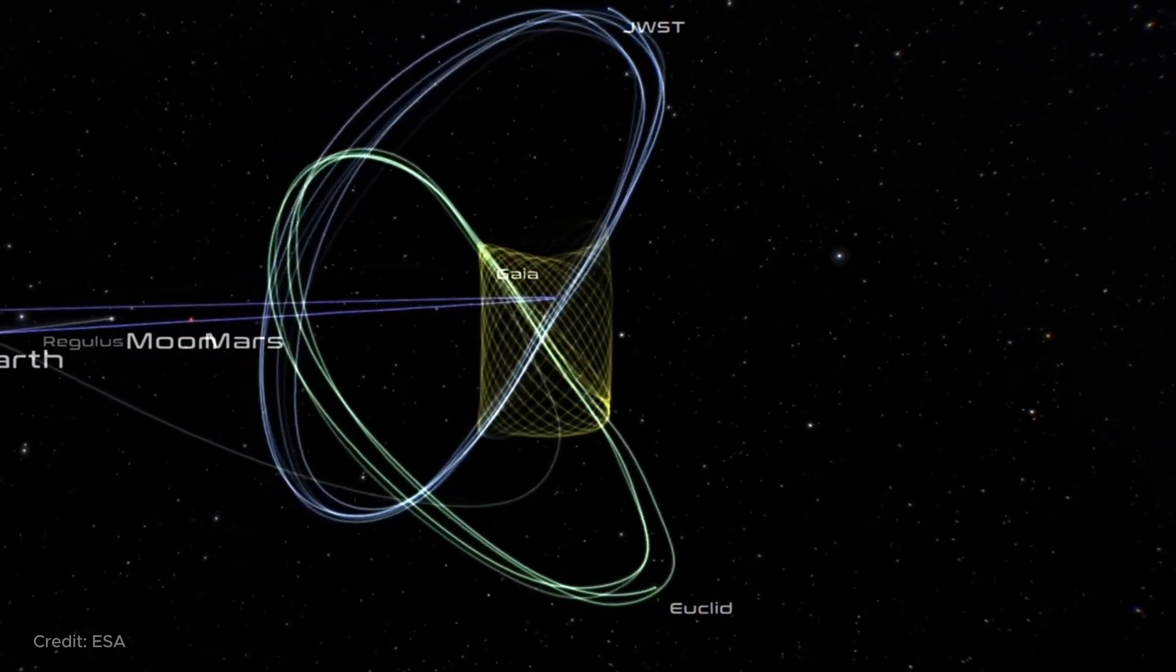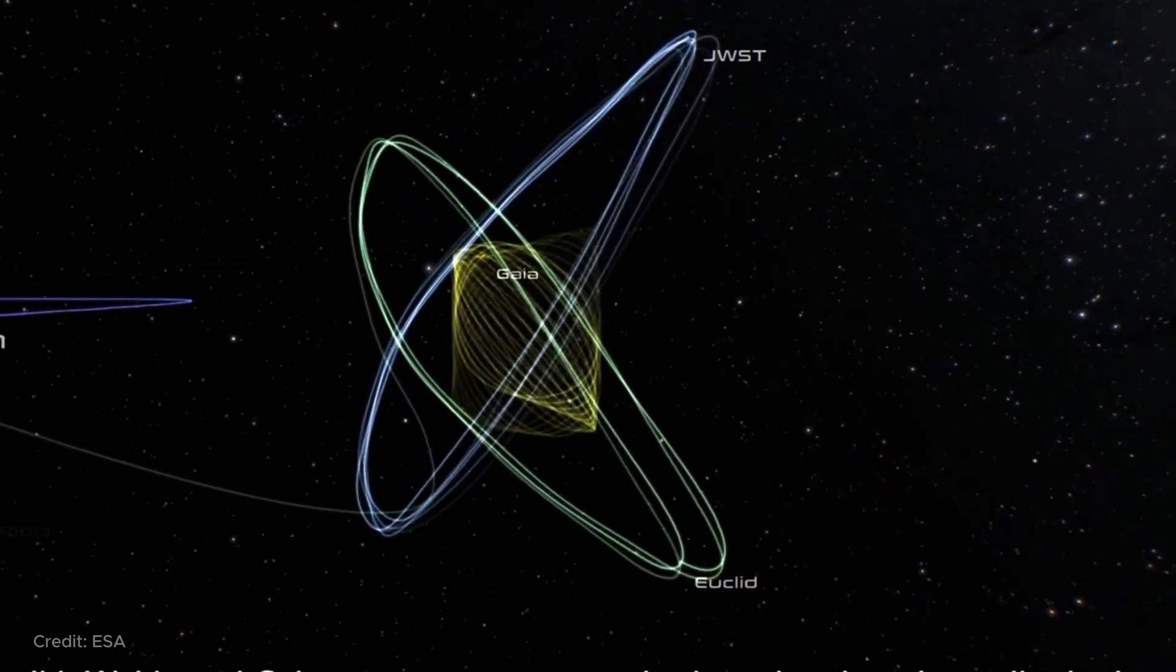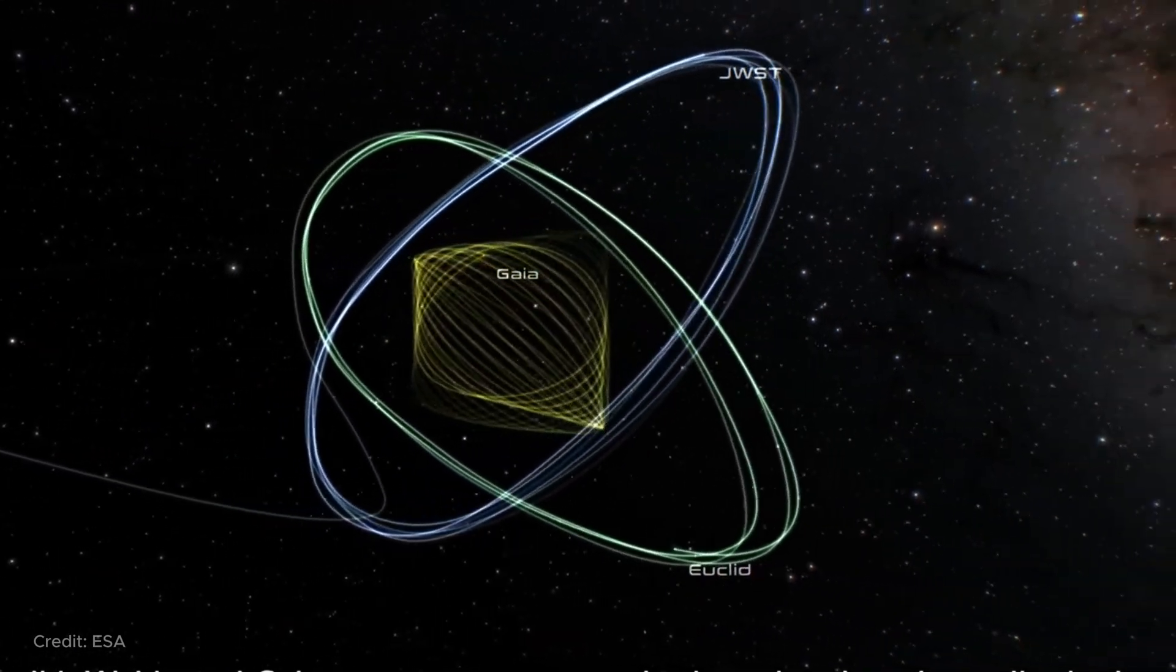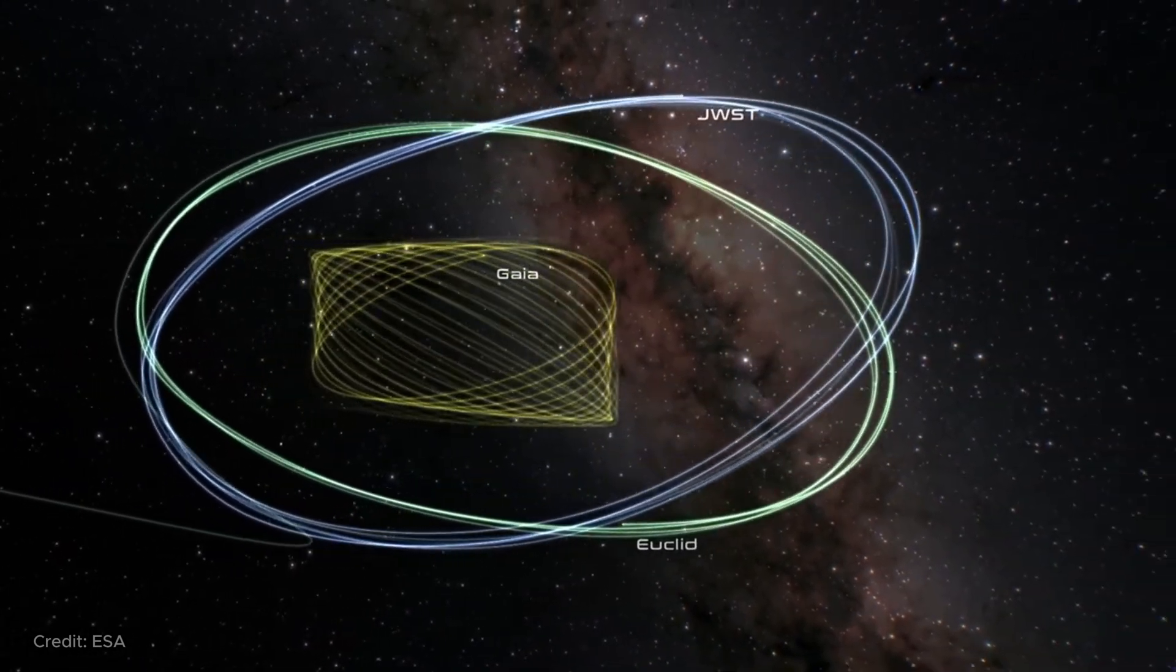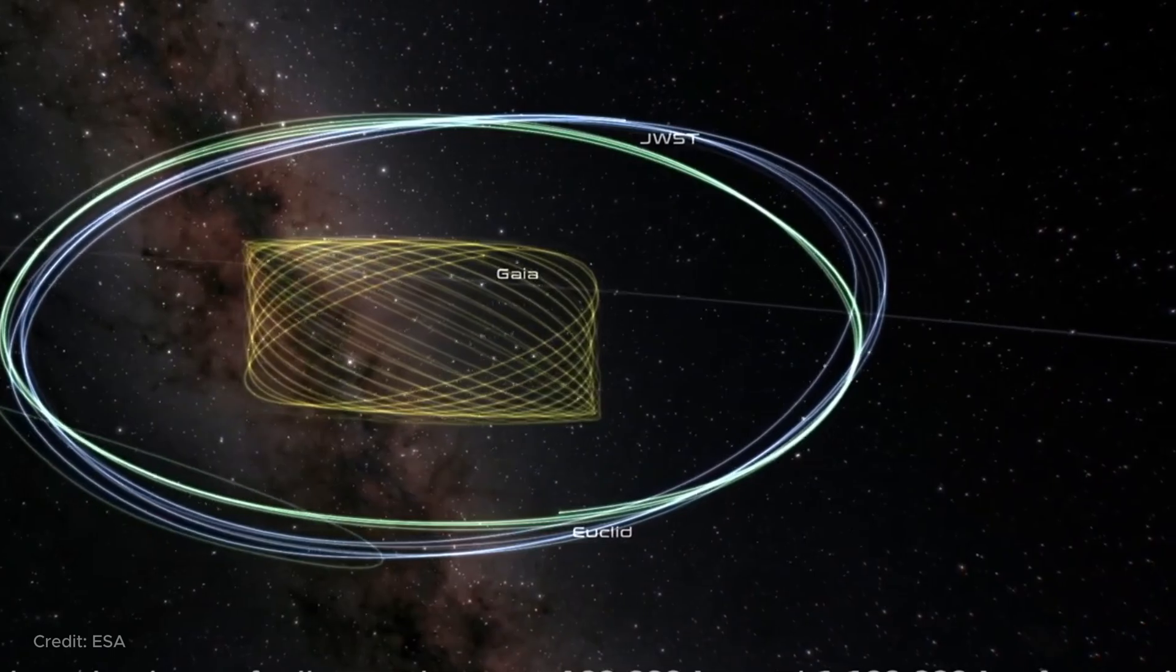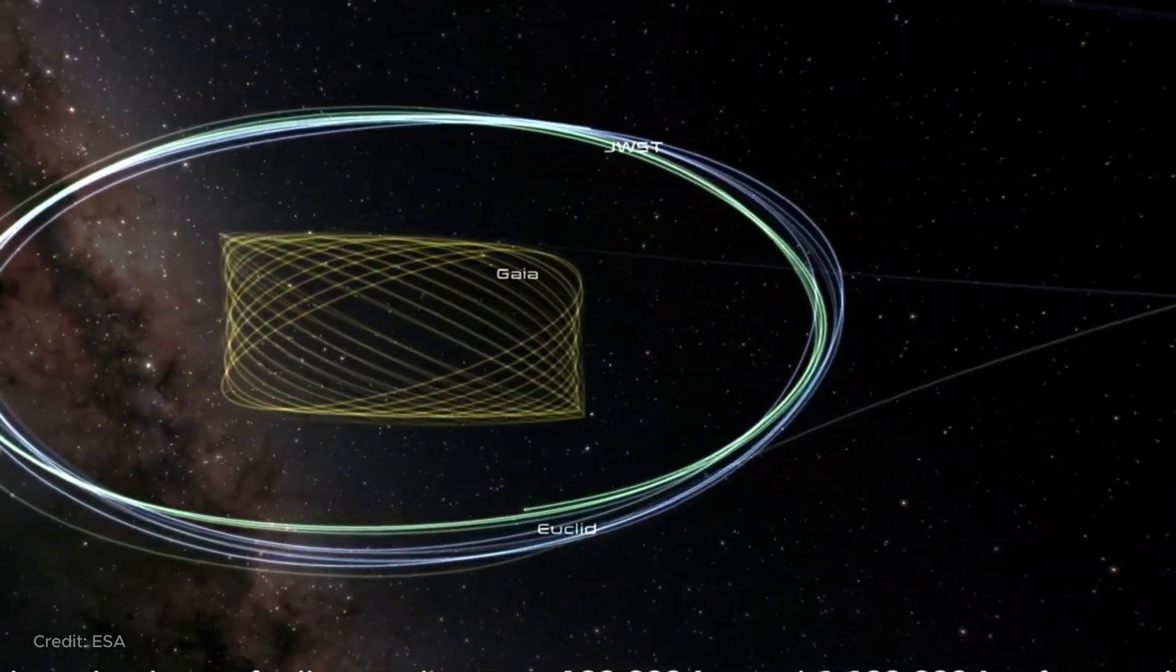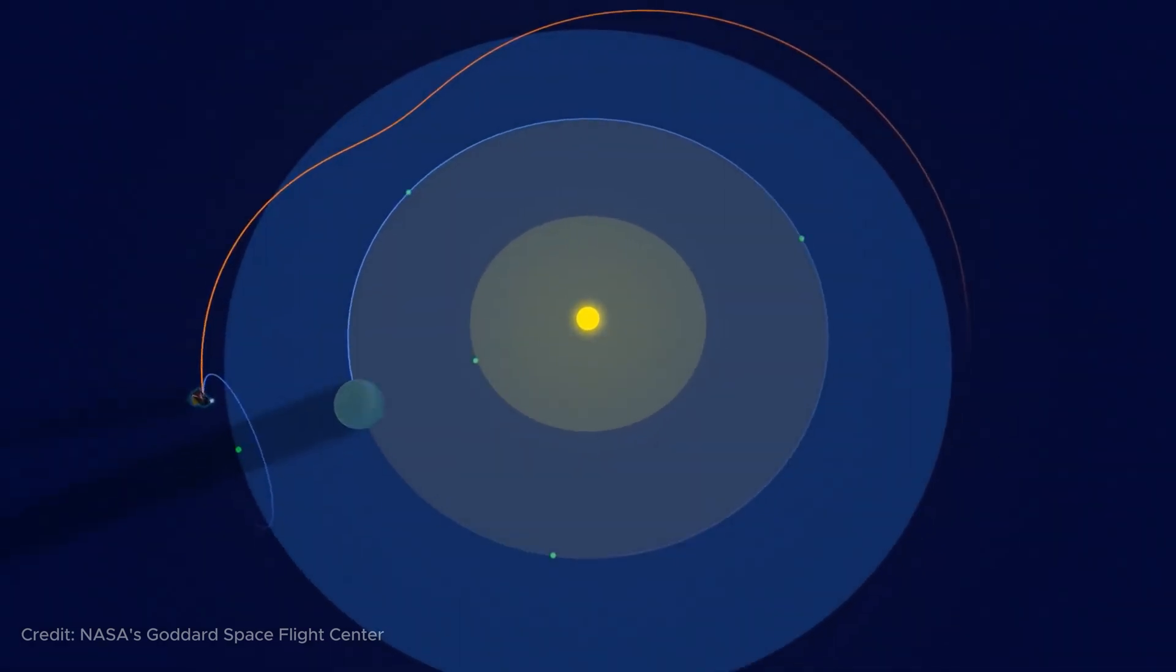And most importantly, since the equilibrium is unstable, the spacecraft must constantly correct its orbit using engines, or it will fly away. This movement around an empty space is observed only if we switch to a reference frame that rotates with the two bodies. If we look at the solar system from the outside, we will see the third body moving in orbit around the other two. This orbit is just a bit strange.